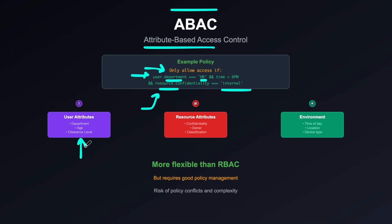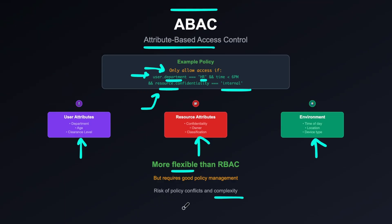With ABAC you check user attributes like department or age, resource attributes like confidentiality, owner, or classification, and also environment factors like time of day, location, or device type. Since you're combining these attributes to grant or restrict access, this is more flexible than role-based authorization, but it requires good policy management and is generally more complex — and you can encounter conflicts with attribute-based access control.